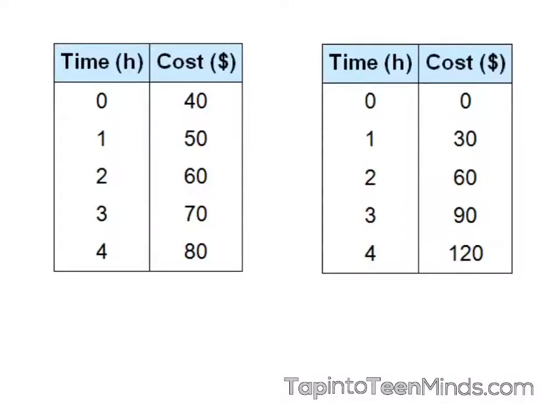Determining whether a relationship is a direct or what we call partial variation is quite simple. A direct variation requires that when x is at 0, the y value must also be at 0. So in the first table, we can see that this is not a direct variation, because when time is 0, the cost is 40.